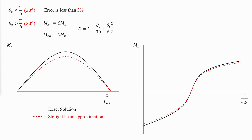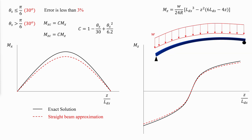The error for the simplified method is less than 3% for theta_s less than or equal to pi over 6. For theta_s greater than pi over 6, the flexural and torsional moments can be calculated using correction factors according to specific equations. For a horizontally curved simply supported uniformly loaded beam, the torsional moment represented by the diagram shown is given by an equation where w is the uniform load and z is the distance along the developed beam length. The maximum torsion occurs at the ends and is zero at the mid-span.